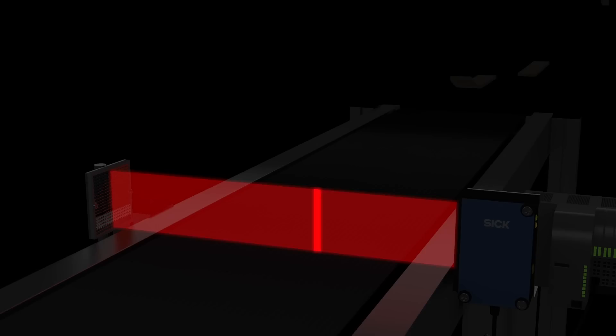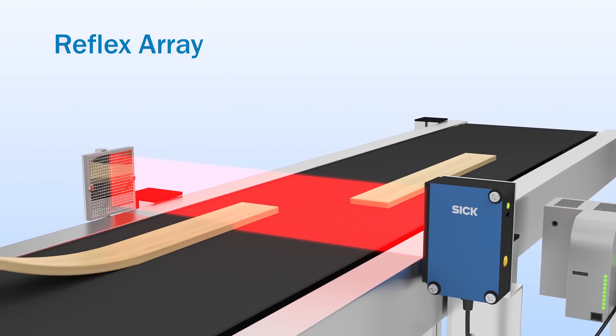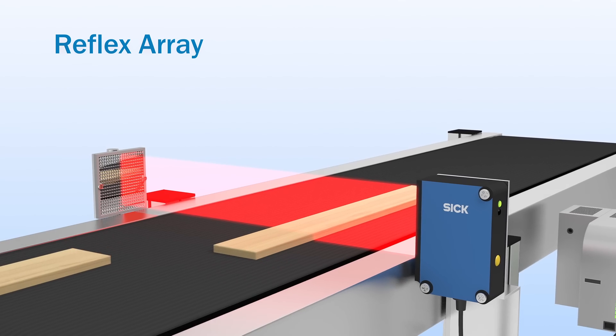The light band of the new reflex array is the answer. Regardless of the position of the object, the reflex array detects everything inside of its light band.